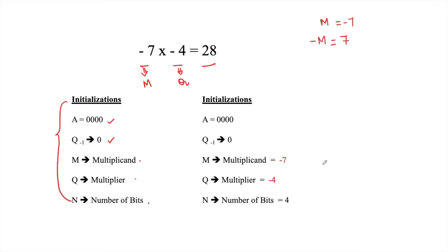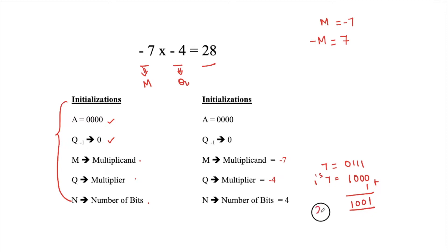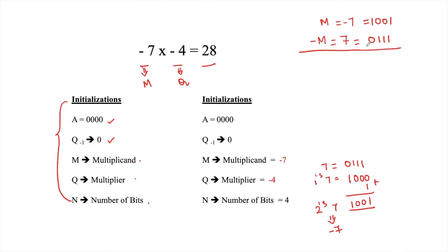Binary equivalent of 7 is 0111. The 1's complement of 7 is 1000. Adding 1 gives 1001, which is the 2's complement of 7, representing minus 7. So: minus M equals 7, whose binary value is 0111, and M equals minus 7, whose binary value is 1001. We have now calculated both M and minus M.